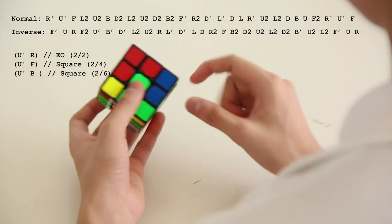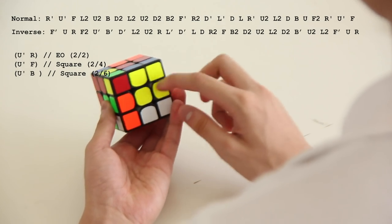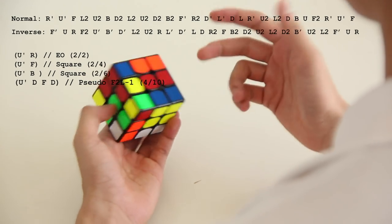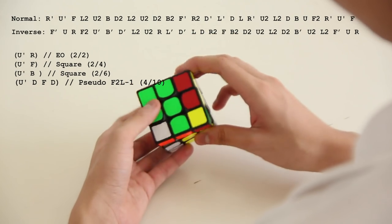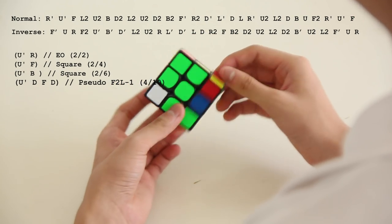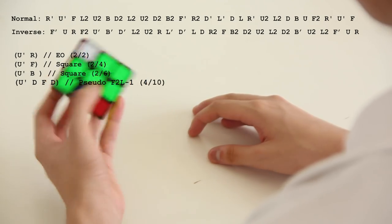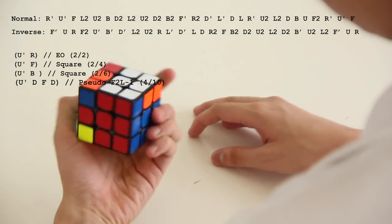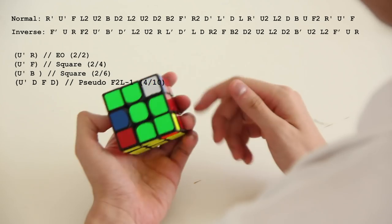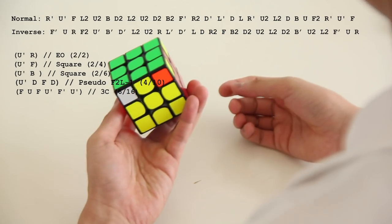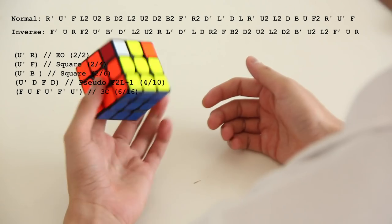And then this square can be extended to a 1 by 2 by 3 by doing D, U', F, then D, F, which gives, I guess this is an F2 minus 1. And then insert this edge, 3 corners in 16.